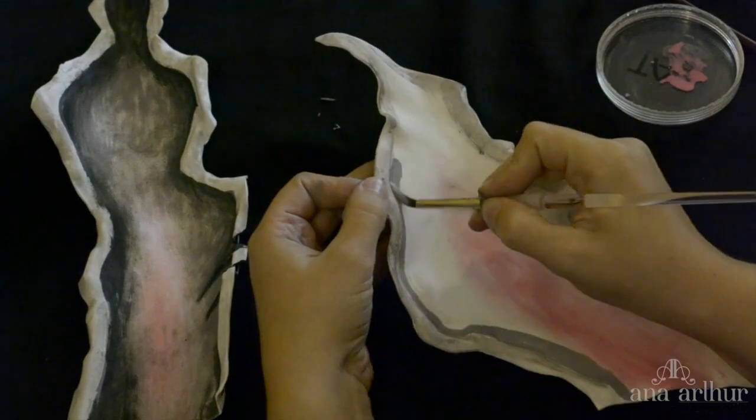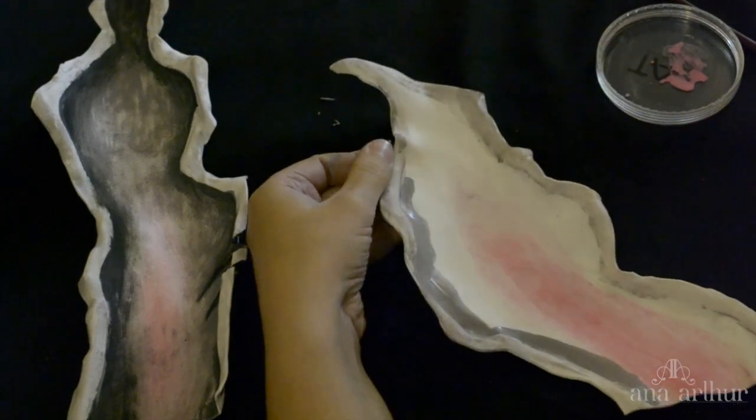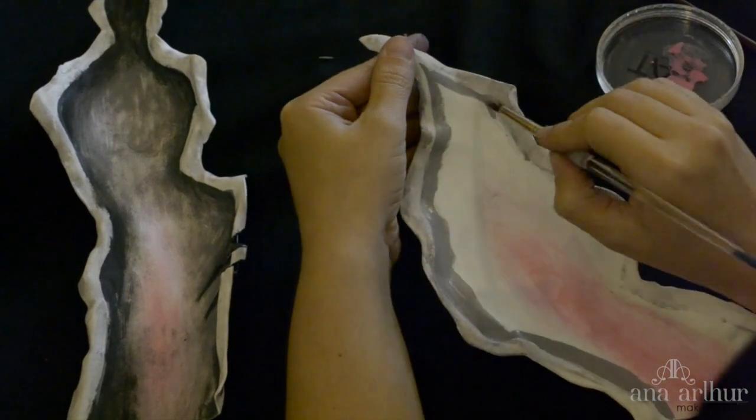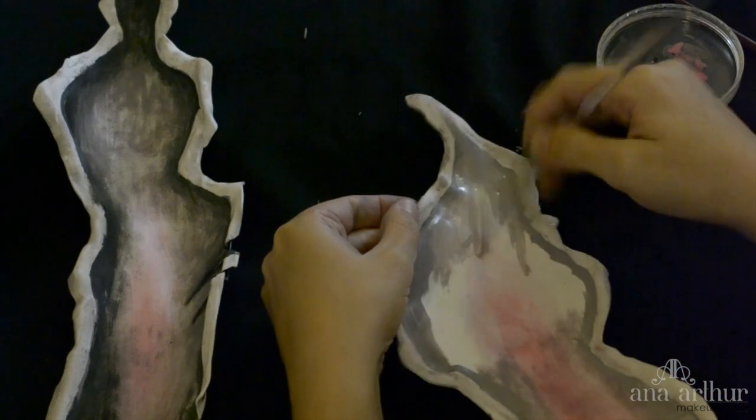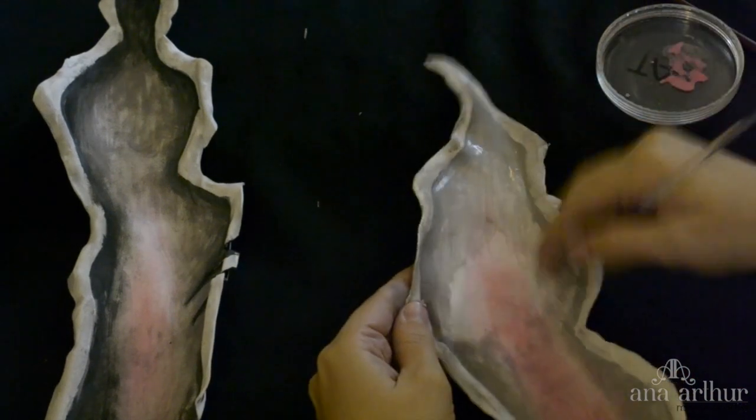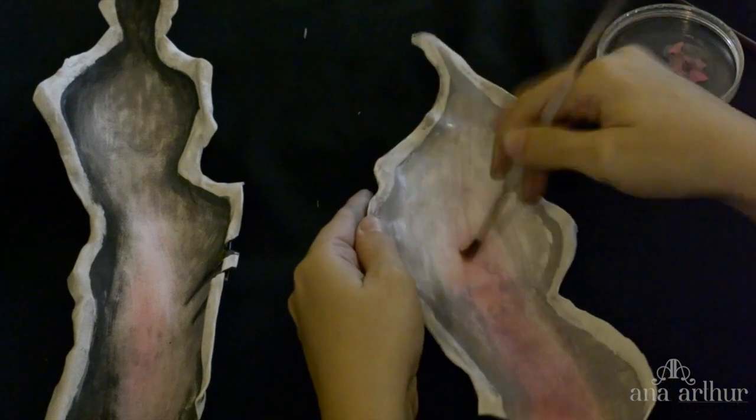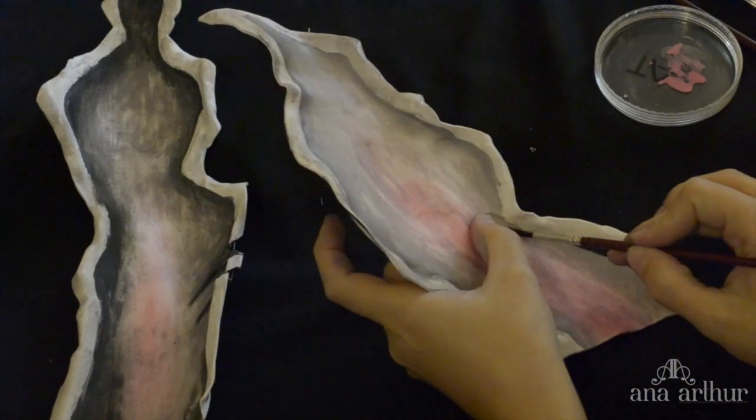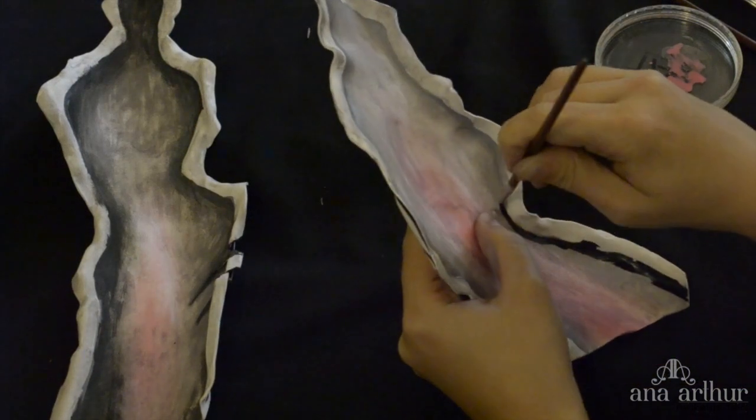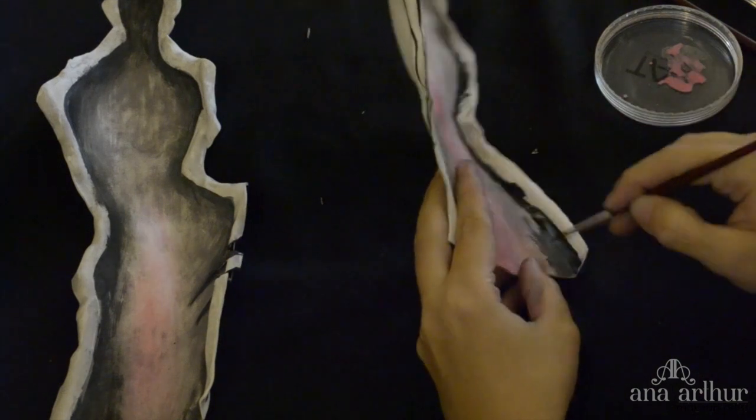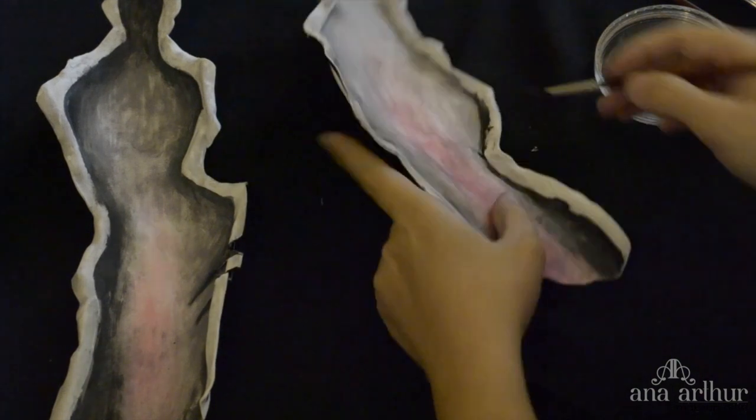I'm blending the colors, but I'm still leaving this roughness because I want it to look like it has hairs. That's why I'm just going back and forth, so it will appear to have hairs. Now I'm using black.